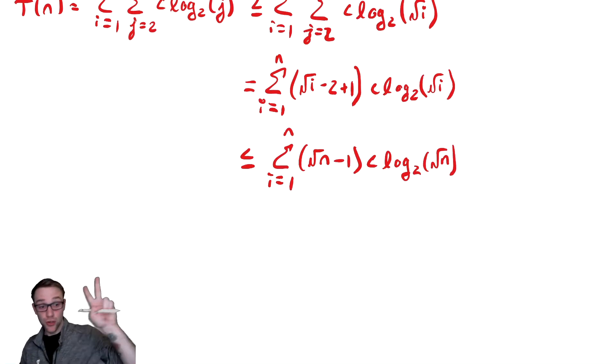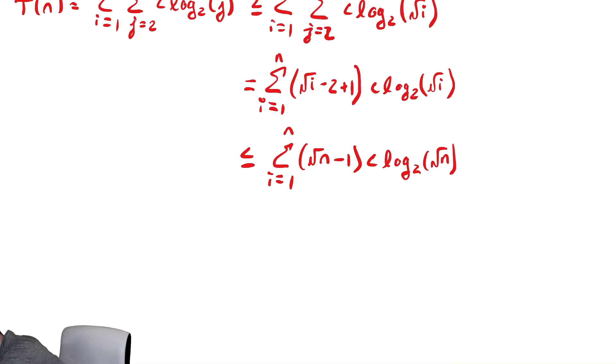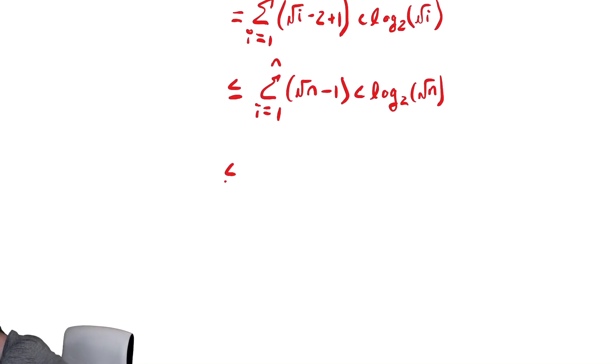And now I'm going to do two steps at once. I'm going to take the sum which no longer has an i inside and multiply it by the number of terms in the summation. And I'm going to drop that minus one because when bounding above, you can always drop negative numbers. So this is less than or equal to n times radical n times c log base two of radical n.